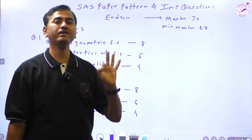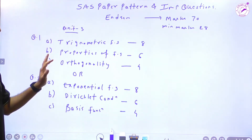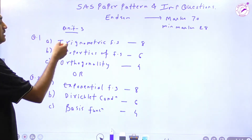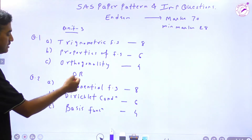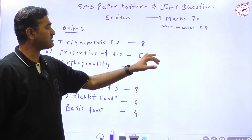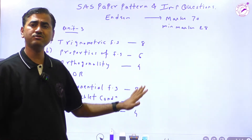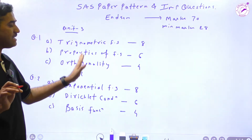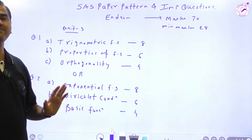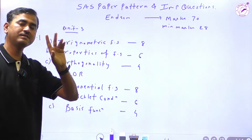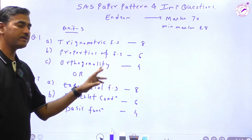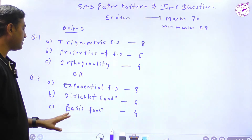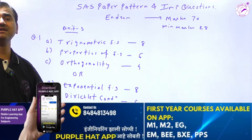Question number 1 and question number 2 are based on Unit 3, which is Fourier Series. Question 1 will have three sub-parts and question 2 will also have sub-parts with varying weightage. The important topics from Unit 3 include: trigonometric Fourier series with numericals, properties of Fourier series with numericals, orthogonal functions, exponential Fourier series with numericals, Dirichlet conditions of Fourier series, and the concept of basis functions.